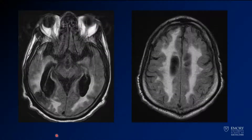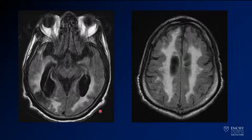Here we see an MR through the same level. We've got some susceptibility in that area, but again we see extensive white matter abnormalities throughout the entire brain — essentially confluent white matter abnormalities, so much that you would call them severe. Definitely some volume loss. These ventricles are far too large even for a patient of 81.